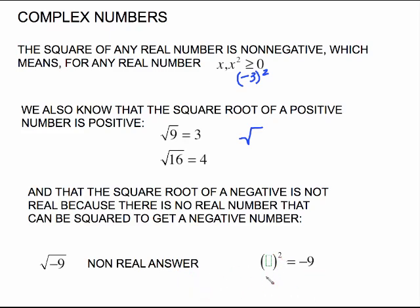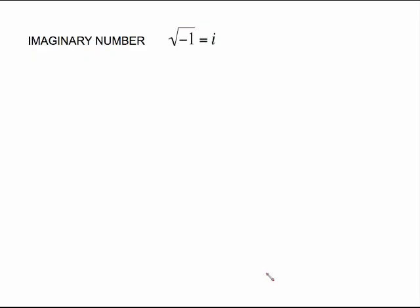Now we're going to put this information together to come up with this new idea, and that is an imaginary number. The square root of negative 1 is defined to be i. The square root of negative 1 is no longer going to be called a non-real answer. It is now going to equal i, which stands for the imaginary unit.